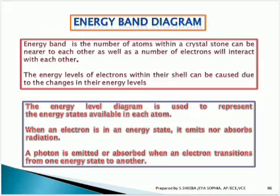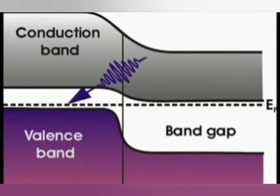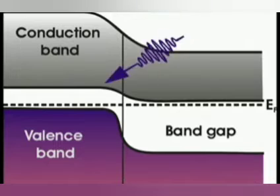The energy band theory is the theory of valence electrons moving in a periodic potential field of a crystalline lattice. Since atoms have discrete energy spectra, electrons can occupy only discrete energy levels. In a non-excited condition, the energy band diagram of a semiconductor shows the conduction band empty and the valence band completely filled. For conductors, the conduction band is completely filled; for semiconductors, partial filling exists; and for insulators, the valence band is completely filled, resulting in no conduction at all.